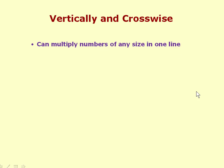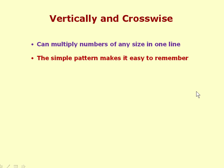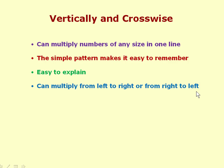So we've seen that we can multiply numbers of any size in one line — not lots of steps, just one line in the Vedic system. The vertical and crosswise pattern can be extended to multiply numbers of any size and always give the answer in one line. The pattern is simple and easy to remember, reducing mistakes. It's easy to explain, and you can work from left to right or right to left — left to right being better for mental calculations.